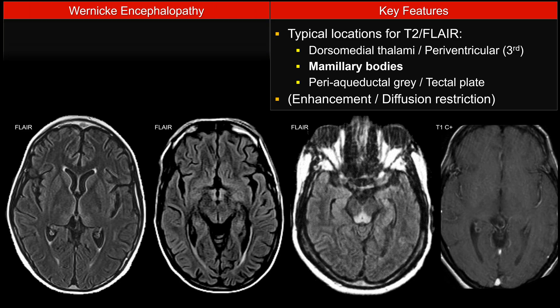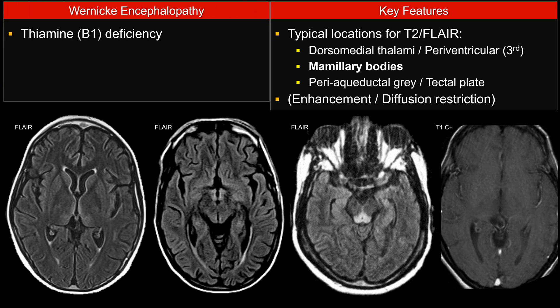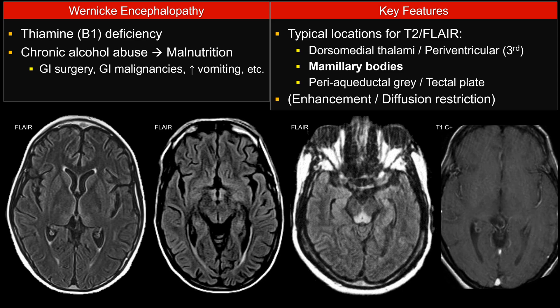For Wernicke's encephalopathy on board exams, it's due to thiamine or vitamin B1 deficiency. Classically, you see that with chronic alcoholics — it's not so much due to alcohol abuse itself, but rather from malnutrition. So anything that interferes with absorption of vitamin B1 can cause Wernicke's encephalopathy, such as GI surgery, GI malignancy, or conditions that can cause prolonged vomiting.